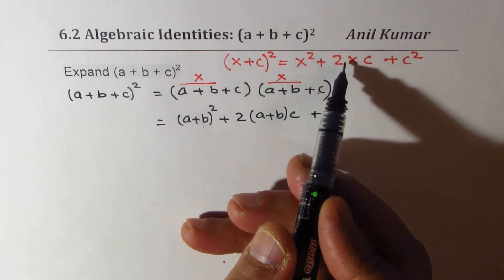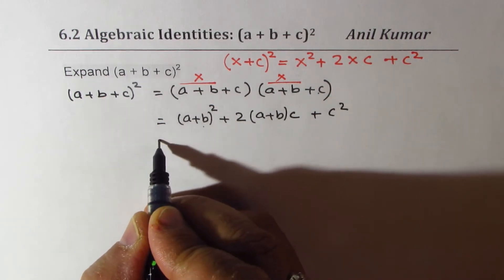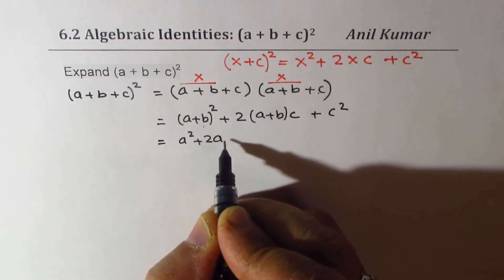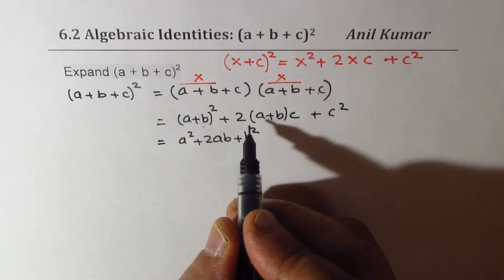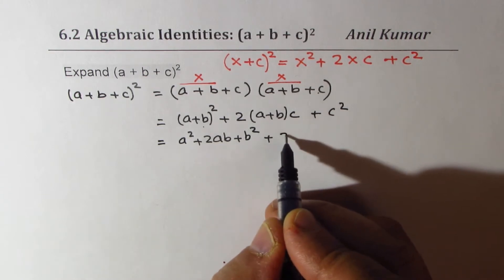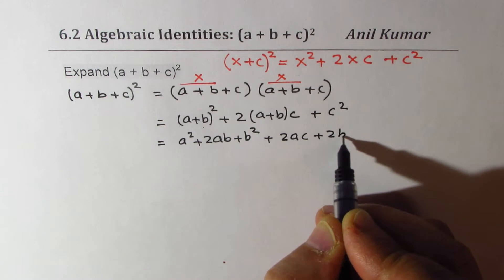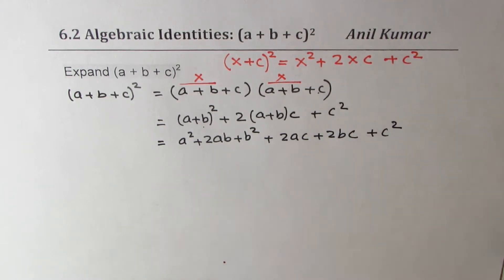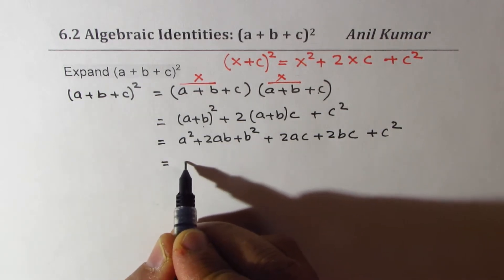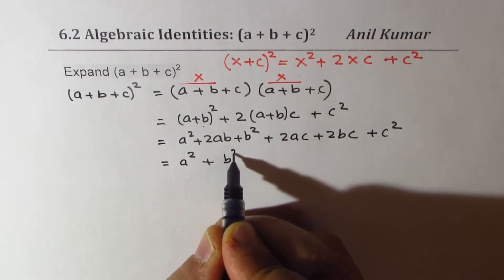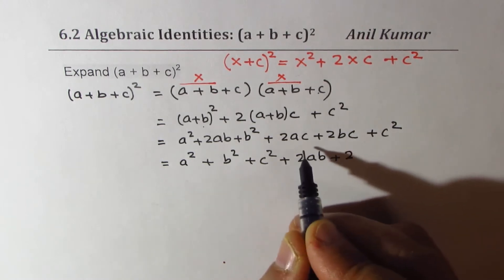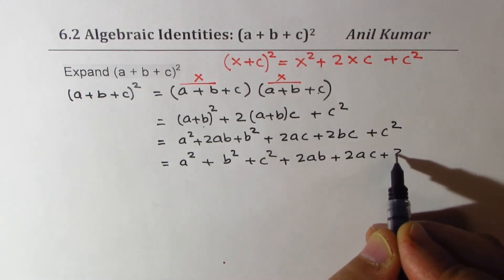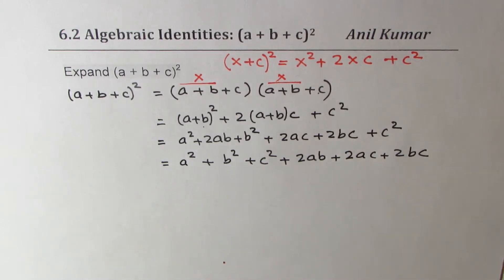Now we know the formula for (a+b)², so we expand that as a² + 2ab + b². That gives us the trinomial for the first perfect square. Then multiplying 2c by (a+b) gives us 2ac plus 2bc, and we already have c².